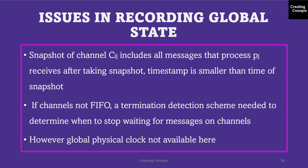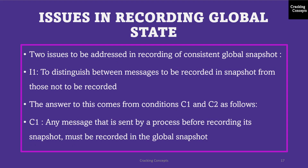Two issues need to be addressed in recording a consistent global snapshot. First, how to distinguish between messages to be recorded in the snapshot from those not to be recorded. The answer comes from conditions C1 and C2: any message sent by a process before recording its snapshot must be recorded in the global snapshot (from C1), and any message sent after recording its snapshot must not be recorded (from C2).